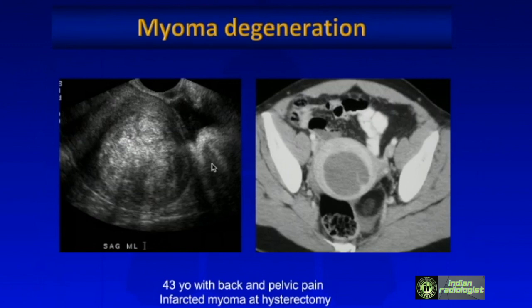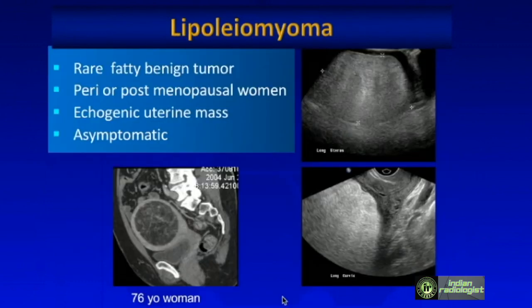This patient presented with back and pelvic pain. She had a CT initially, and you can see this myoma does not enhance normally — probably due to cystic degeneration, which is likely why this patient had pain.